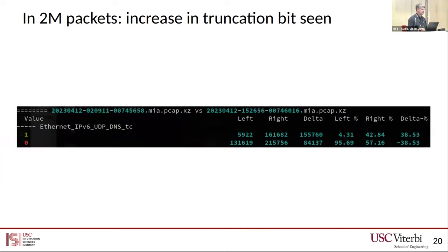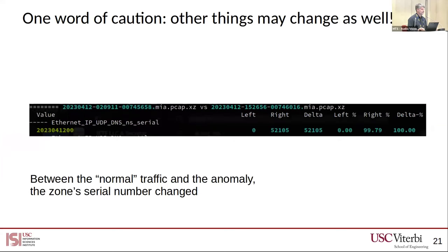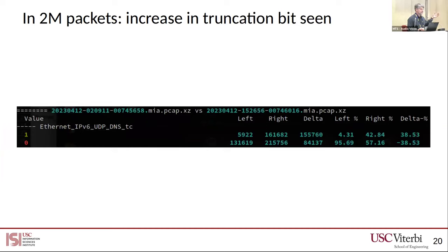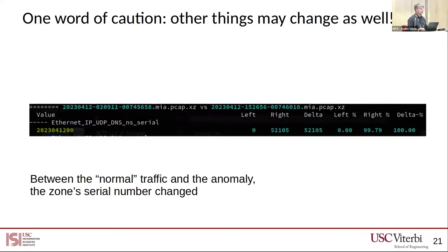There was a significant increase in the truncation bit. This is looking at both responses and incoming requests. The truncation bit indicates they sent so many queries it kicked into RRL — the rate limiting that most servers do these days. When you send too many queries, the server says come back over TCP, I no longer trust that you're not spoofed. You do have to watch out, though: there was a 100% change in the SOA number because the root zone rolled between my left and right-hand side — so you have to account for things like that.